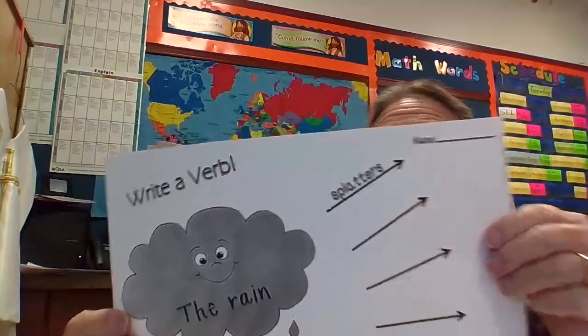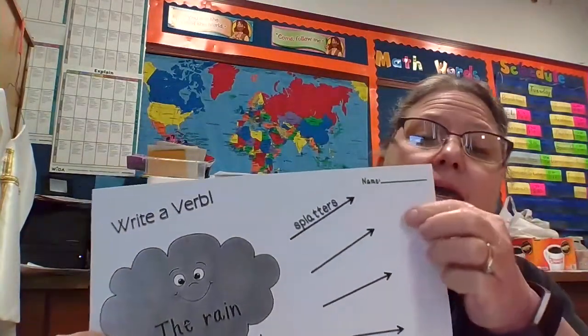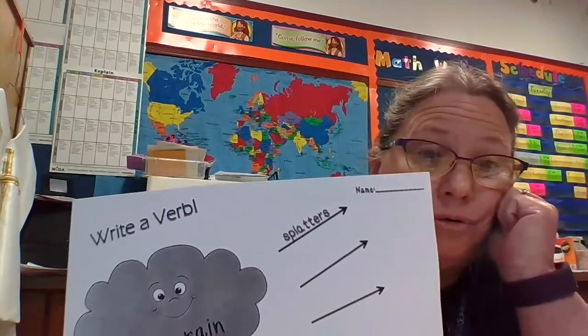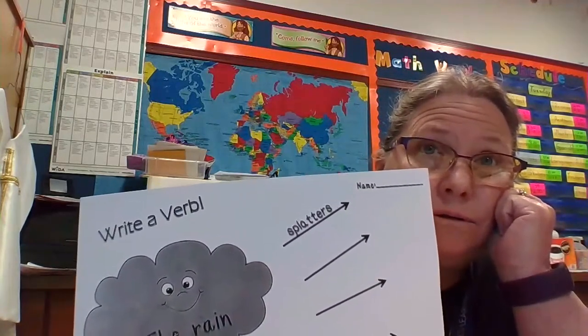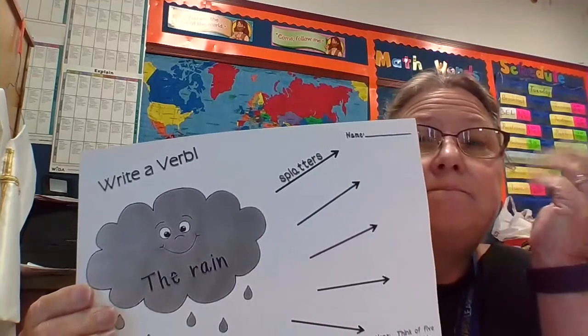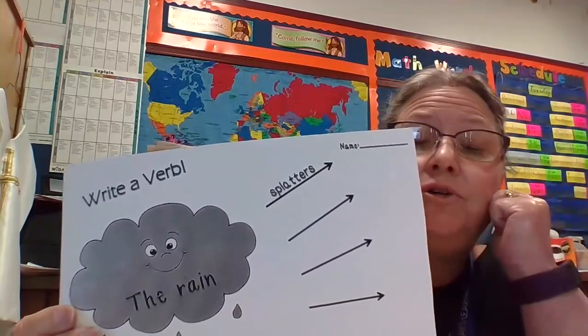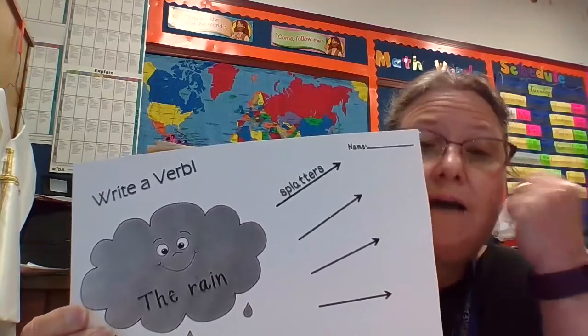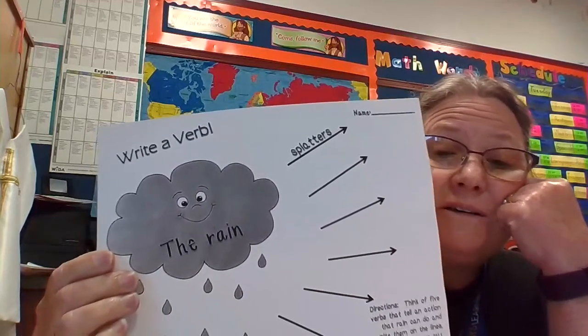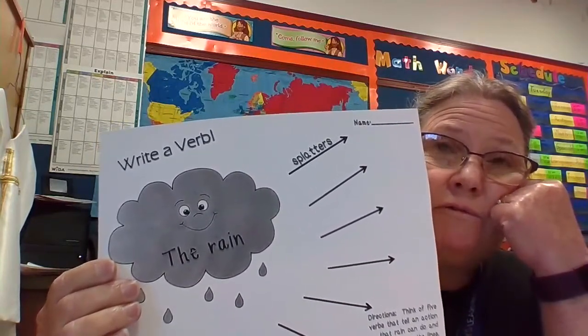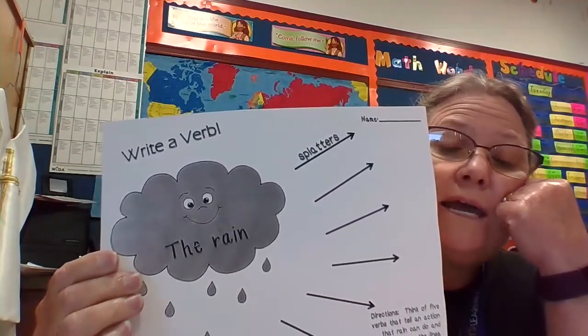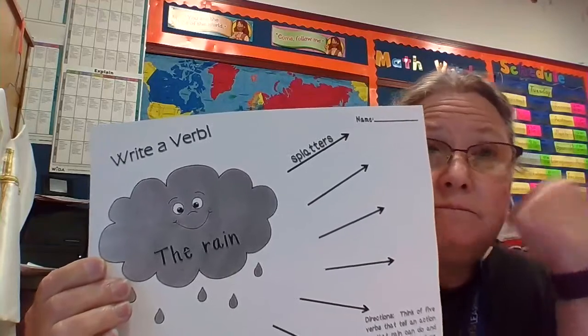So I want you to think of some other things about what the rain does. The rain hurts, it can hurt you now. You can hurt. You can action, you can hurt. The rain falls. You can fall, so you can do that. That's an action verb. The rain falls. What else could the rain do? What else does it do when it rains? What does it look like?